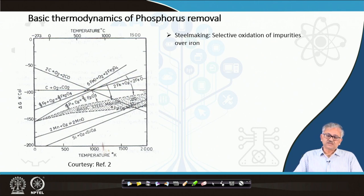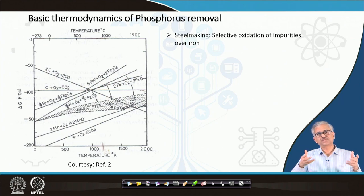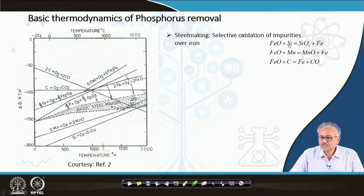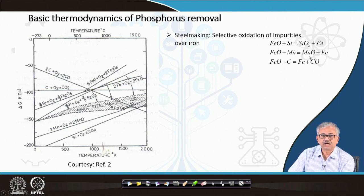When oxygen is charged into liquid iron, oxygen sees only the iron — 95% by weight — so iron oxide forms first. Then impurity oxidation takes place if the impurity oxides are much more stable compared to FeO. If SiO₂ is more stable than FeO, or MnO is more stable than FeO, or CO is more stable than FeO, then silicon reduces FeO to iron and oxidizes to SiO₂; manganese oxidizes to MnO; and carbon oxidizes to CO.